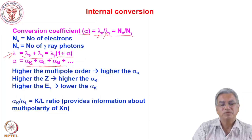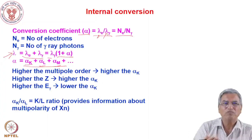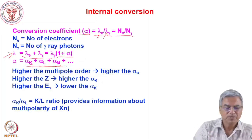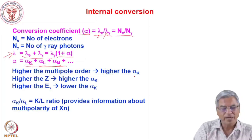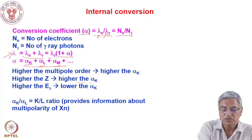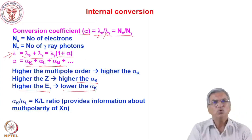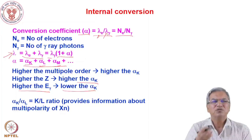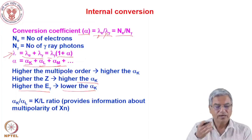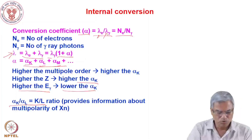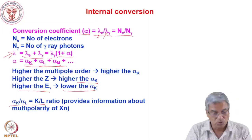Higher multipolarity gives a higher conversion coefficient α. For lower multipolarity, gamma emission is more probable; for higher multipolarity, internal conversion is more probable. This applies to α_K, α_L, and α_M. Similarly, if Z of the nucleus is high, the conversion coefficient is high. If the energy of the gamma ray is high, the conversion coefficient is low. Internal conversion is therefore more favored for low-energy gamma rays, high-Z nuclei, and high multipolarity. Measuring the K/L ratio experimentally gives information about the multipolarity of the gamma ray.